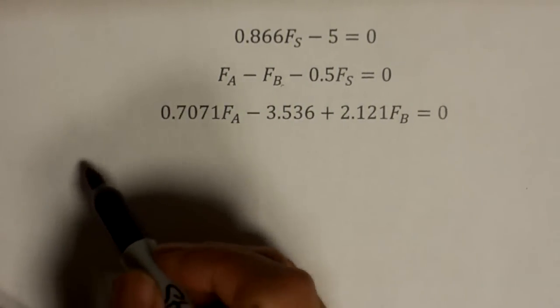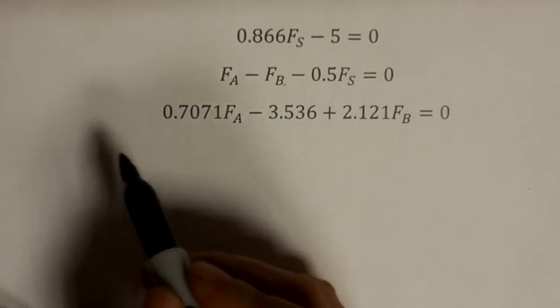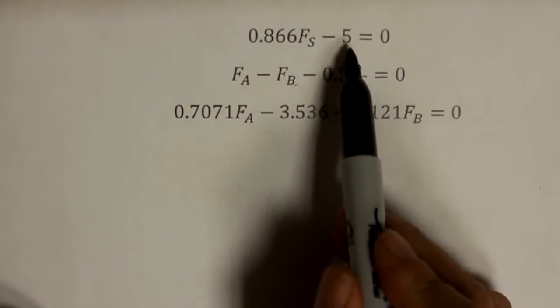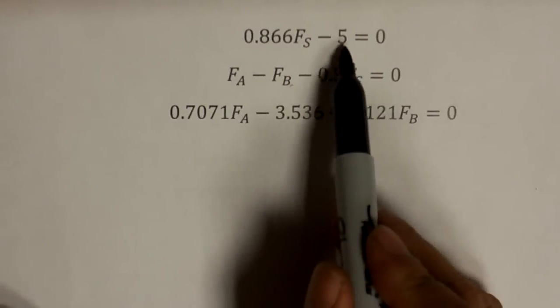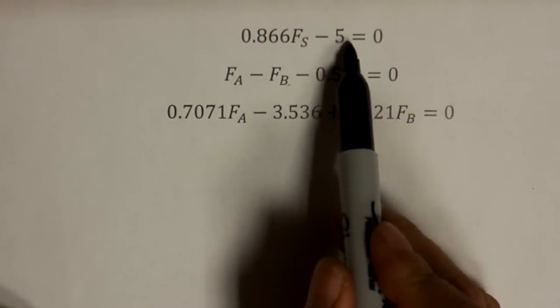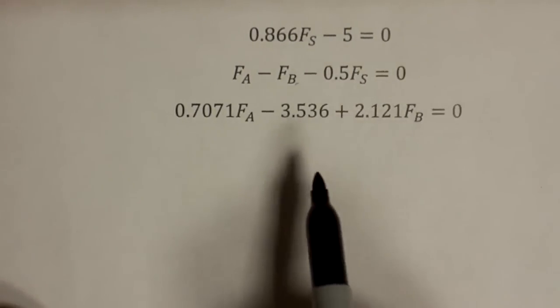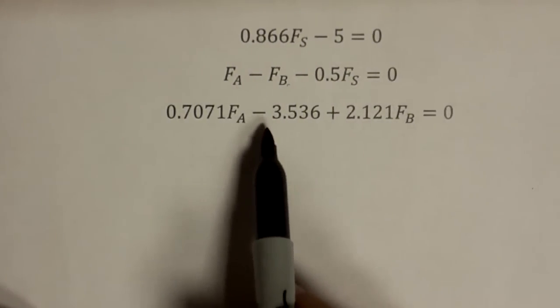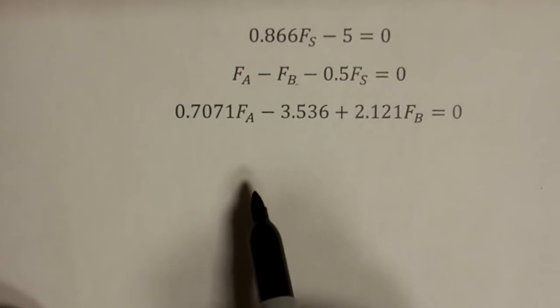How do you make this into AX equal to b? First, what you have to do is identify all these terms that do not have the unknown variables. Here is 5. It does not have Fa, Fs, or Fb, so that should be moved to the other side. There is another one, negative 3.536. That does not have any variables, so that must move to the other side.